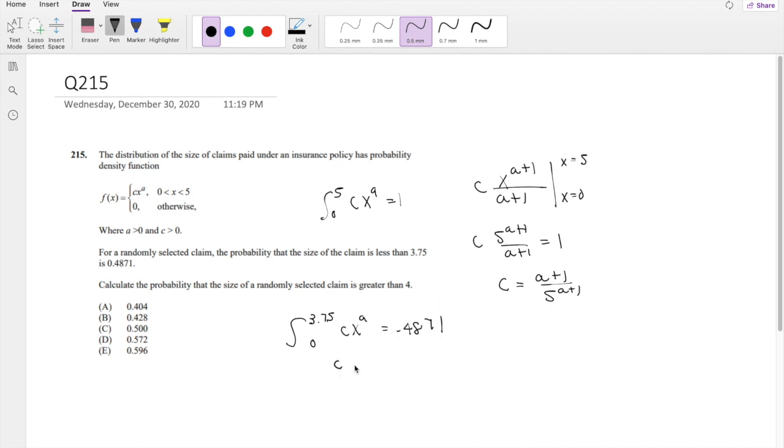This is equal to 0.4871. Same thing, c times x^(a+1) over (a+1), evaluating x from 0 to 3.75. What does it equal to? c times 3.75^(a+1) over (a+1) minus 0, which is 0, is equal to 0.4871.